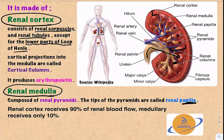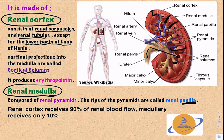In between the pyramids there are cortical projections called cortical columns — these are projections from the cortex into the medulla, found between two renal pyramids. The renal cortex receives 90% of the total renal blood flow, while the medulla only receives 10%.